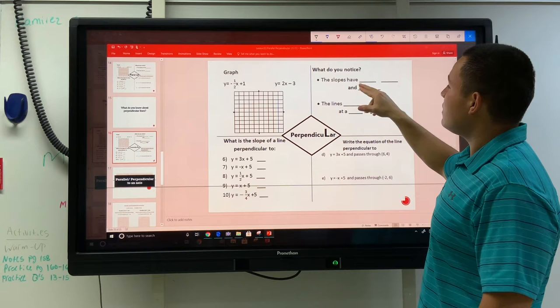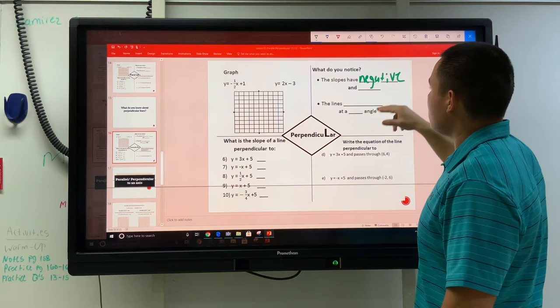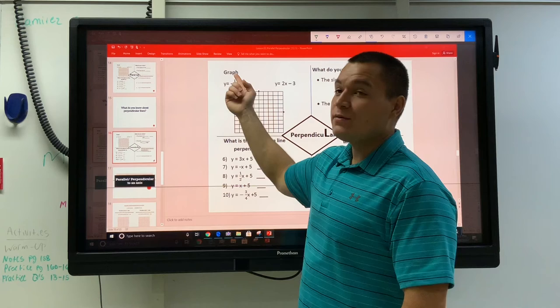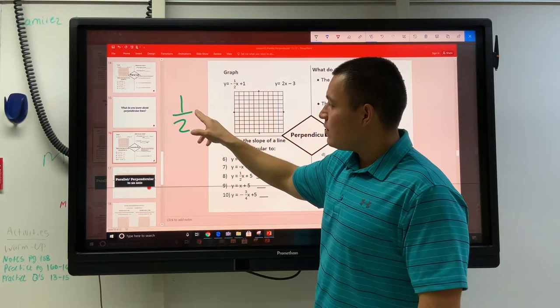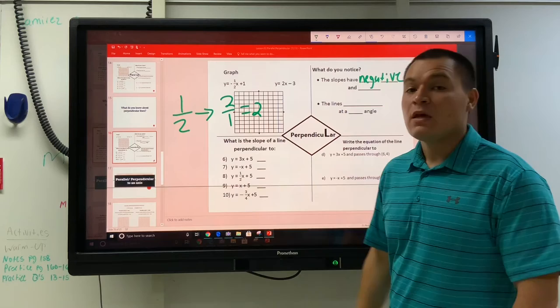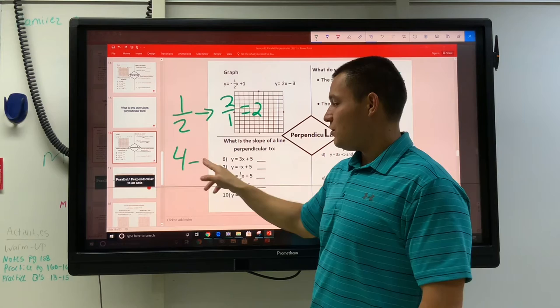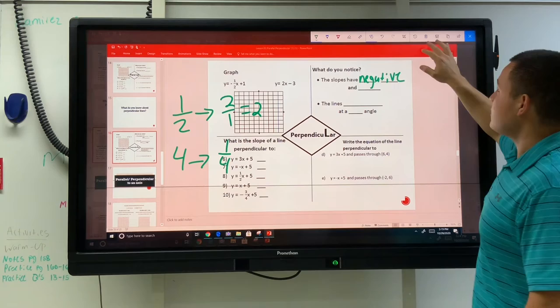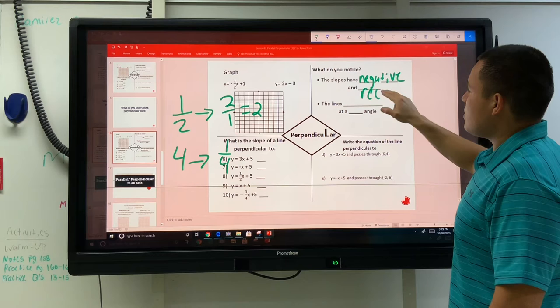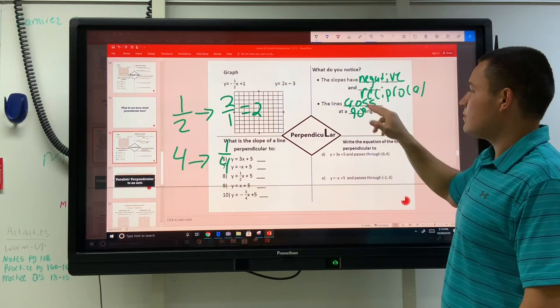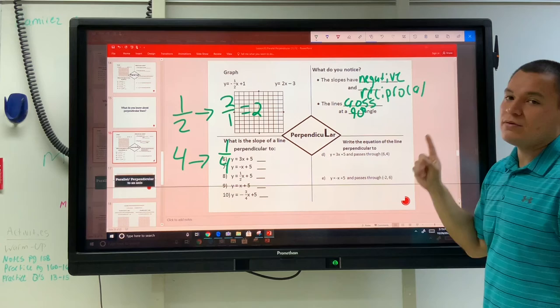The slopes have a negative, and they also have a fractional type of relationship. This one's a 2, the regular number 2, this one's a 1/2. What happens is we took the 1/2 and we flipped it to be 2 over 1, which is just the number 2. Every time we do perpendicular lines, you're going to do the reciprocal. And the reciprocal means the flip of the fraction. If they give you a regular number, you're going to change it to be 1/4. And we'll get there when we get there. So the slopes have a negative reciprocal relationship. The lines cross at a 90 degree angle. The lines cross at a 90 degree angle, the slopes have a negative reciprocal relationship.